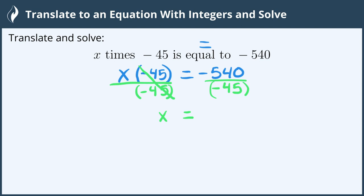540 divided by 45 is 12, and a negative divided by a negative is positive, so x equals 12 is our solution.